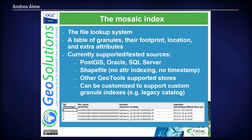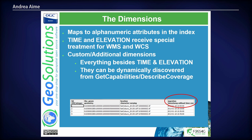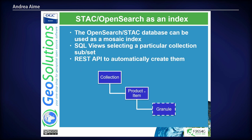The mosaic index looks like a table where I have the location of the image, its footprint, but also all the attributes I would like to use for filtering, sorting, and stacking the images — such as time, elevation, the run time of a weather model, and so on. We have dimensions. Dimensions are recognized by OGC protocols. If I look at the WMS or WCS capabilities document, I would find a description of the time domain, elevation domain, and so on, that clients can then use to filter down the data they want.